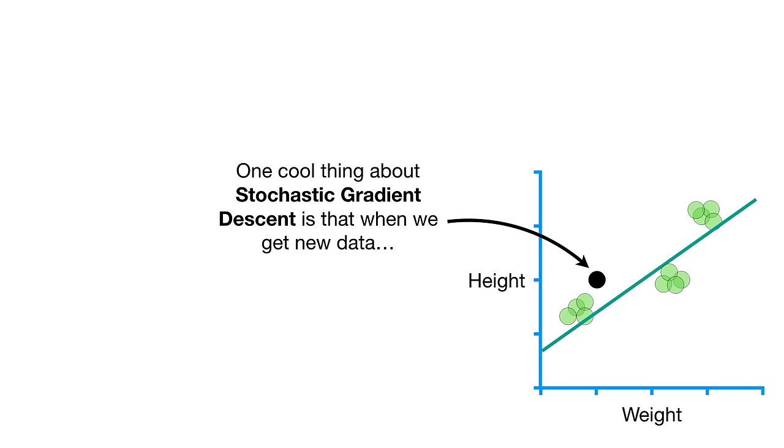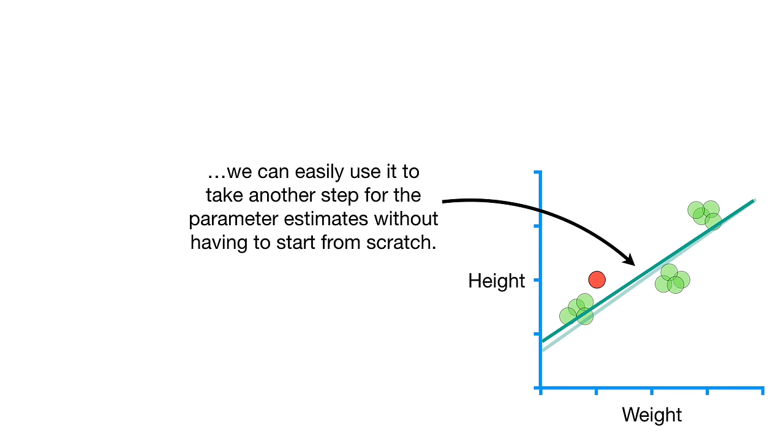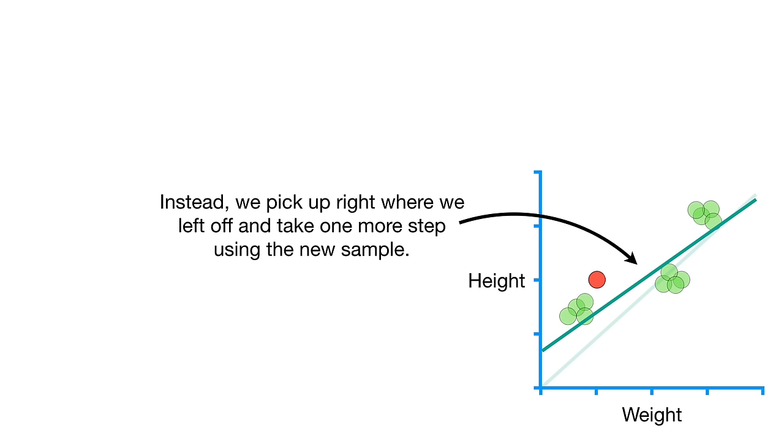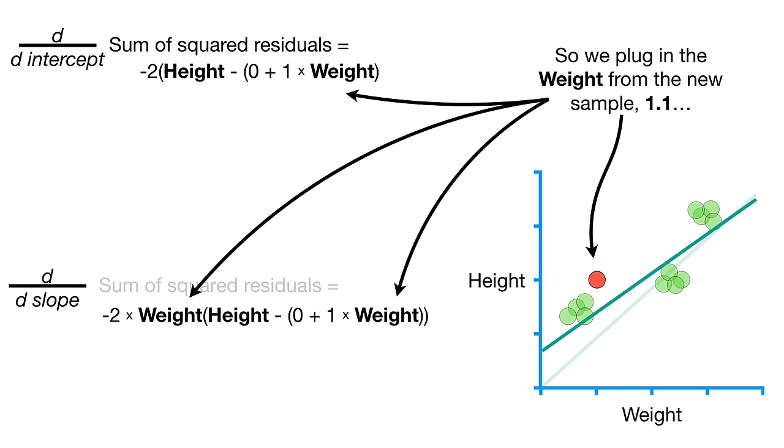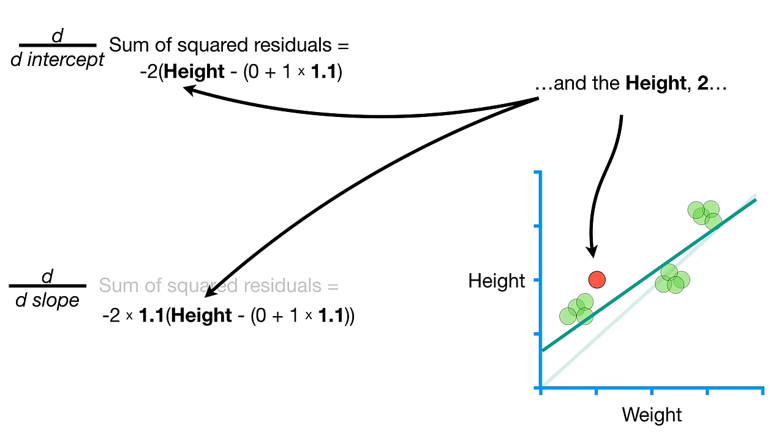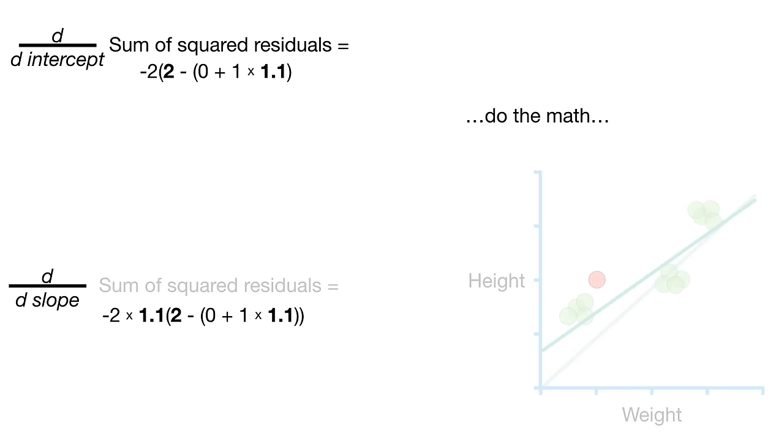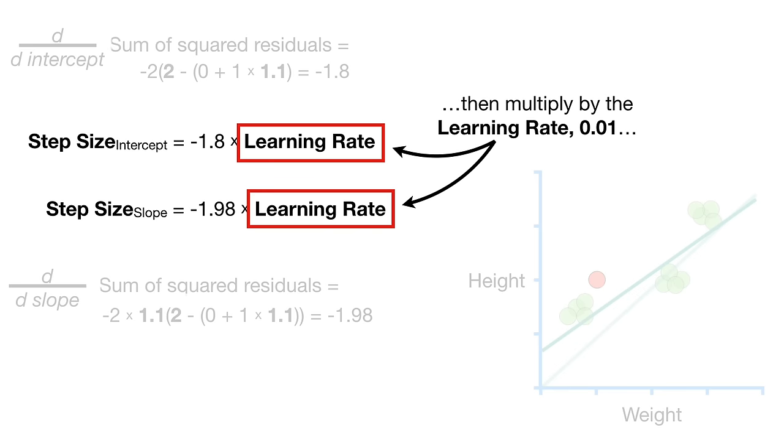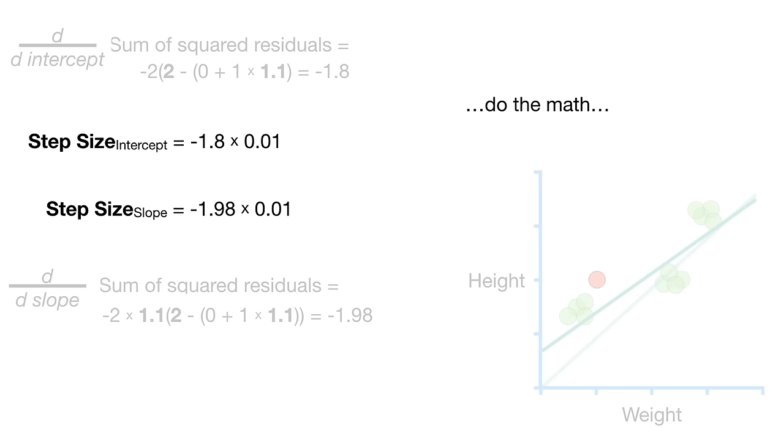One cool thing about stochastic gradient descent is that when we get new data, we can easily use it to take another step for the parameter estimates without having to start from scratch. In other words, we don't have to go all the way back to the initial guesses for the slope and intercept and redo everything. Instead, we pick up right where we left off and take one more step using the new sample. So we plug in the weight from the new sample, 1.1, and the height, 2. Do the math, plug in the slopes, then multiply by the learning rate, 0.01, do the math.